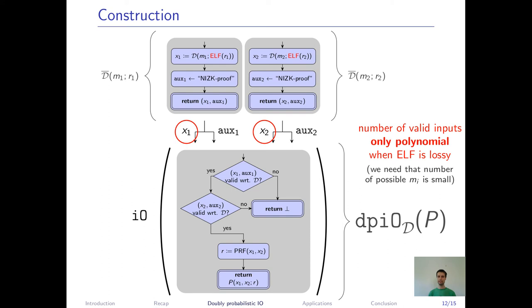If we switch the ELF to being lossy now, the number of valid inputs Xi, so the inputs where the obfuscation does not abort, decreases to a polynomial amount, if we additionally assume that the number of possible Mi is also small. Then, the one input at a time hybrid argument due to Canetti et al. only needs to be done for this polynomial amount of inputs and only needs a polynomial reduction relative to I.O.